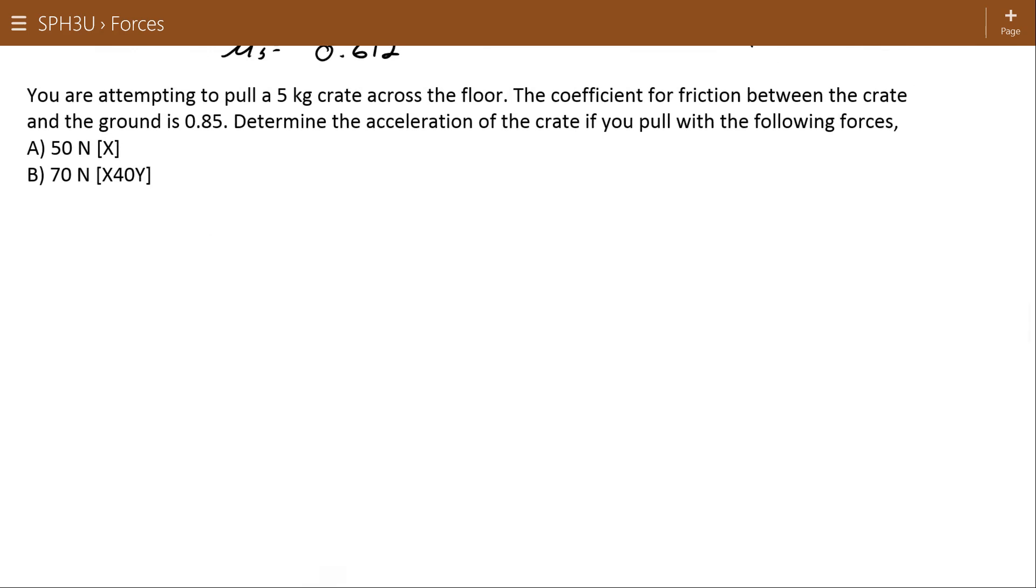Okay, we have another 5 kilogram crate on the floor. You're applying a force to it, and it's asking you to determine the acceleration of the crate if you pull with the following forces. Here I'm going to recognize that I have a force of gravity, which is going to be negative 9.8 newtons per kilogram, times my 5 kilograms, or negative 49 newtons. That means if we assume that it's a flat ground, nothing weird is going on with the normal force, it's equal to the force of gravity at 49 newtons. I have a coefficient of friction of 0.85.